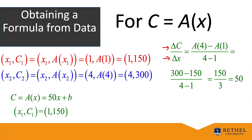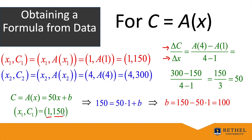This leads to the formula c = A(x) = 50x + b, where b is an unknown constant. Plugging in the point (1, 150): replace x with 1 and c with 150, then solve for b by subtracting 50 from both sides, giving b = 150 − 50 = 100. The final answer is c = A(x) = 50x + 100.